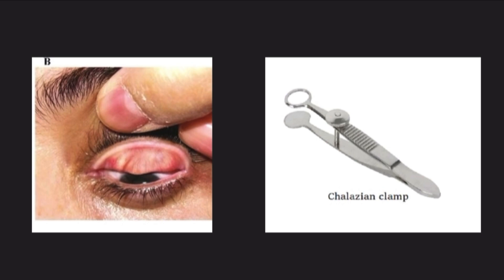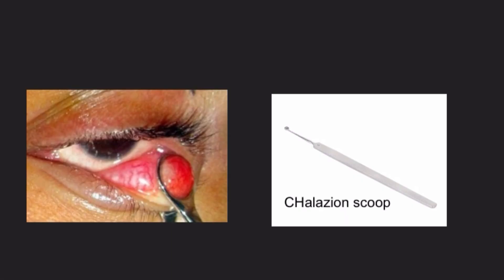For the incision and curettage technique you need two instruments: the chalazion clamp and the chalazion scoop. Importantly, the incision is not made over the skin but on the conjunctival side. The chalazion clamp is used to hold the chalazion in place before making the incision.